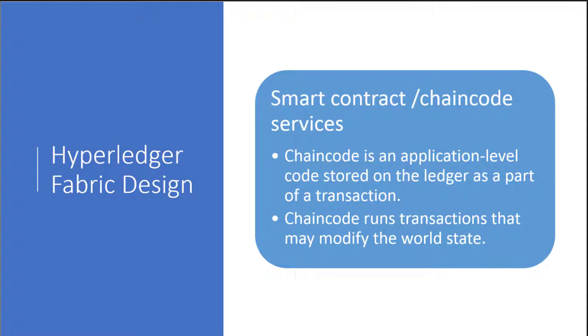When it comes to smart contracts and chain code services, it's an application-level code that's stored on the ledger as part of a transaction. One thing to know for the exam is that chain code runs the transactions but could also modify the world state. Chain code is written in the Go programming language. You'll want to set it up and configure it, make a directory for your chain code application, and create child directories. When you implement chain code, it's going to invoke one of two functions: either the init function or the invoke function.